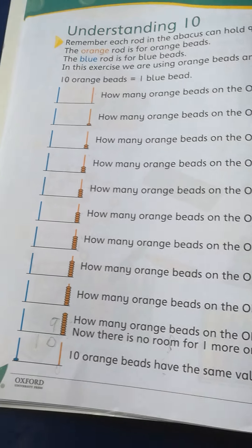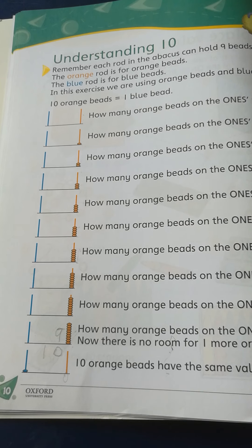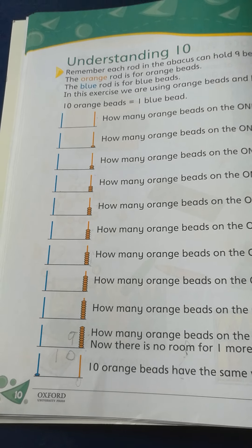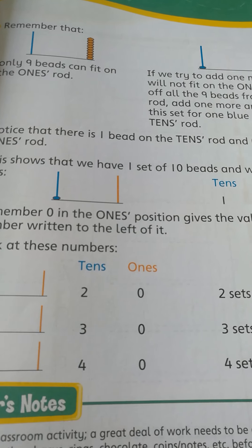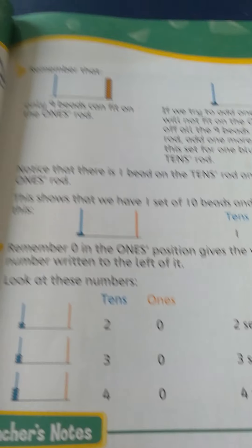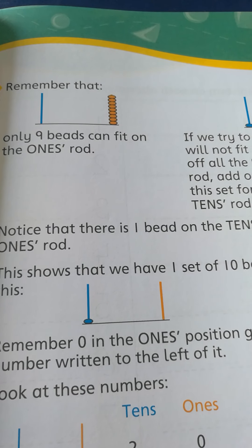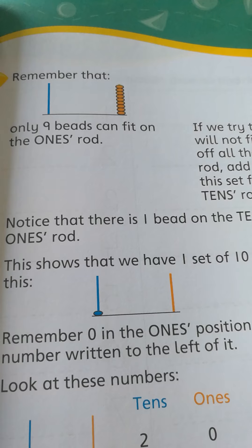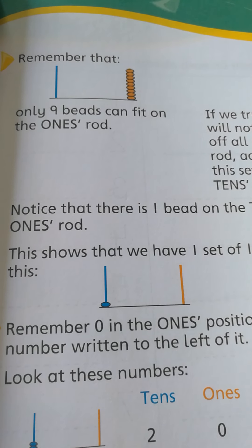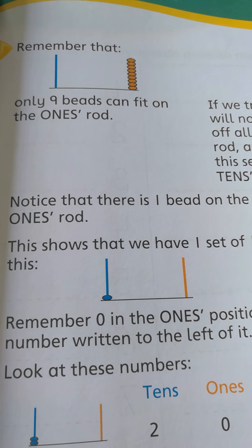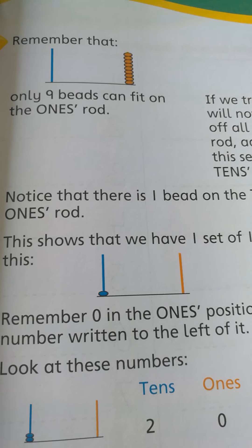As you all know, we have studied the lesson understanding the tens and ones on page number 10. Now we are continuing the same lesson on page number 11, where you can see the abacus. The blue line is empty and the orange line is filled with the beads. The blue line is for tens and the orange line is for ones.